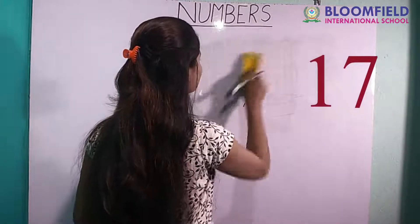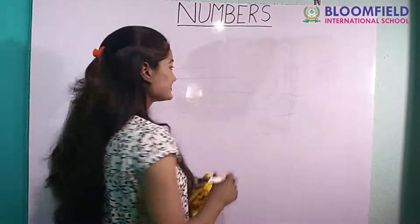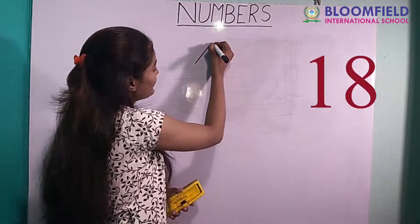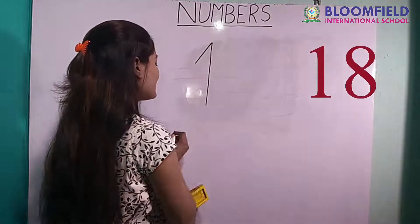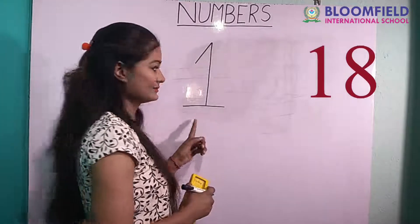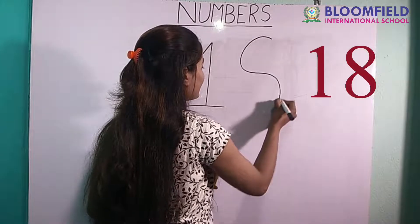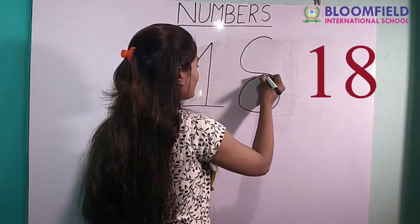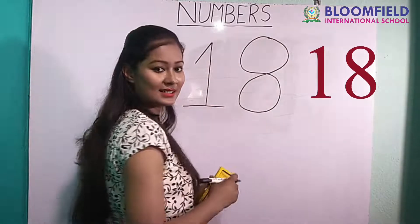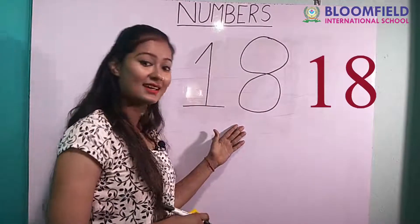One standing line, then small slipping line. Small curve, then again curve — circle. Good. Then again circle. Very good. One eight. Eighteen.